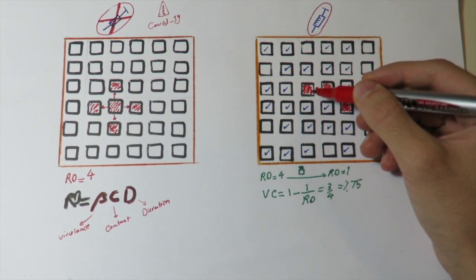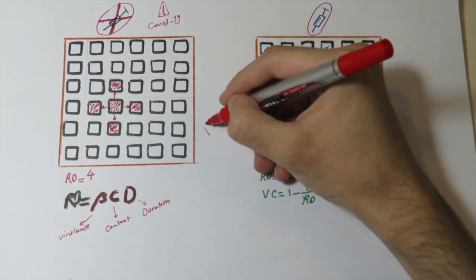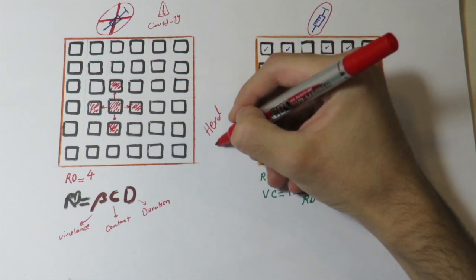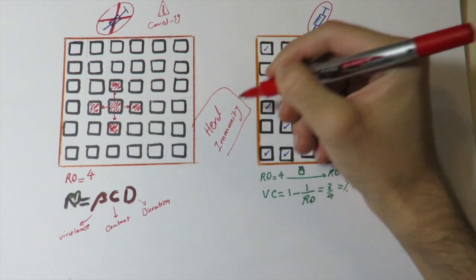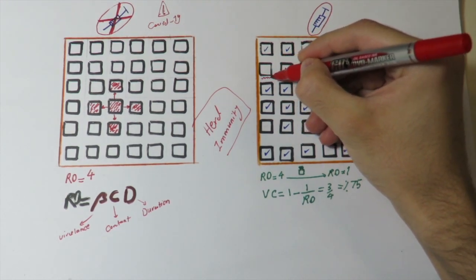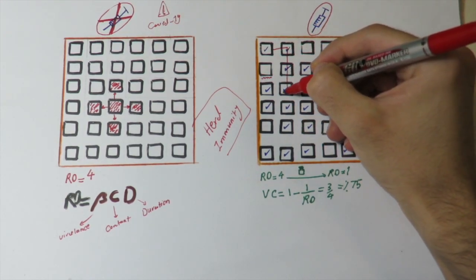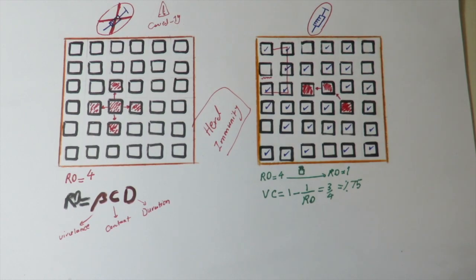And here we have this very important explanation of herd immunity. You can see these unvaccinated people are clearly protected from the coronavirus by the other five people who are vaccinated. So when our vaccination rate reaches 75% and our R0 reaches 1, this is what happens. Herd immunity helps to interrupt the transmission of the virus.